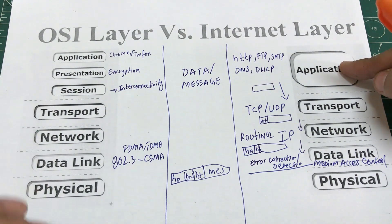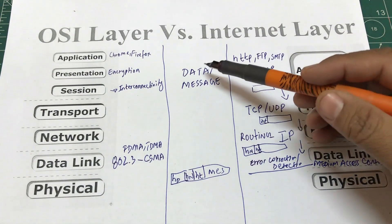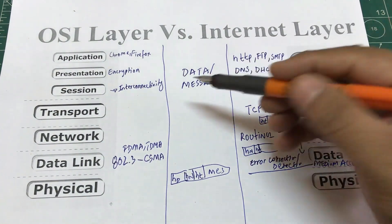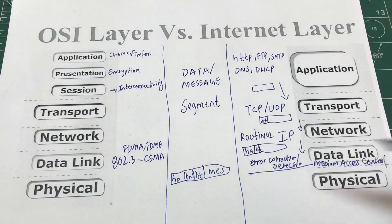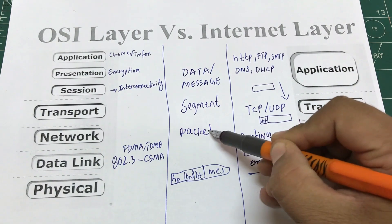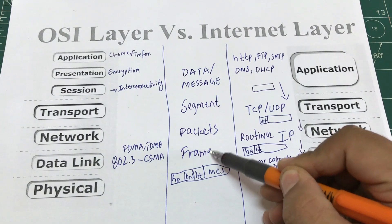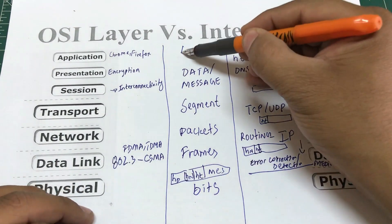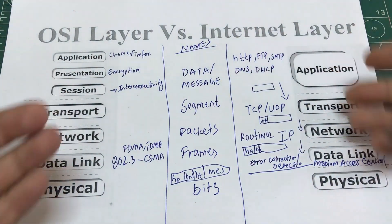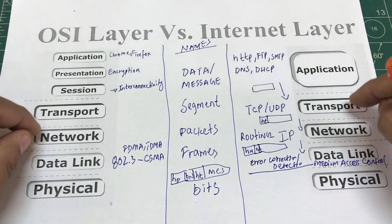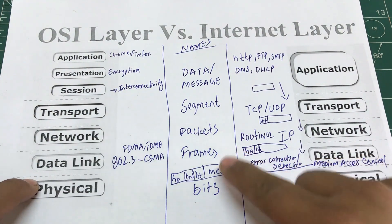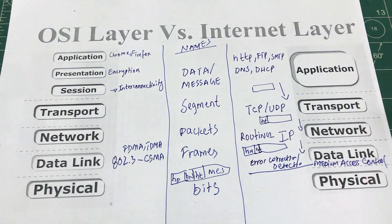Let's quickly look at what data is called at every layer. At the application layer it's called a message. At the transport layer it's called a segment. At the network layer it's called a packet. At the data link layer it's called a frame. At the physical layer it's just called bits. If transmitting wirelessly, those bits are converted into electromagnetic waves.